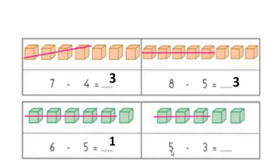The sum is 5 minus 3. There are 5 objects. Out of that, I have to cut 3 objects: 1, 2, and 3. How many objects are remaining? 1 and 2. So 5 minus 3 equals 2.